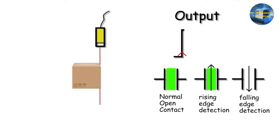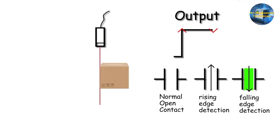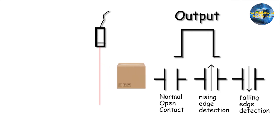The normally open contact will remain closed as long as the box is in front of the sensor. In this way we can detect precisely when the sensor output signal turns on. When the box leaves, the sensor output signal goes off, but the falling edge detection contact will be turned on for one scan cycle, then turned off in the next — this is how we detect when the sensor output turns off.